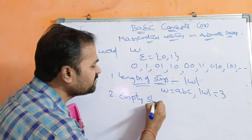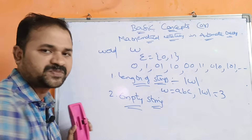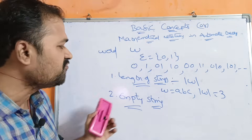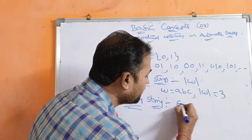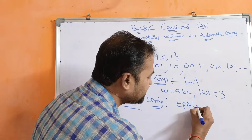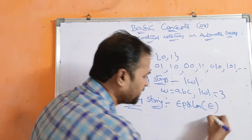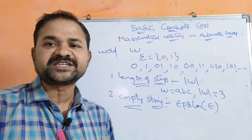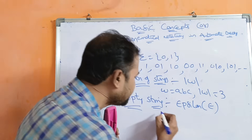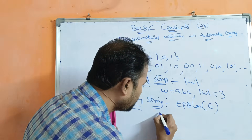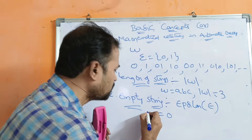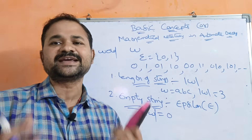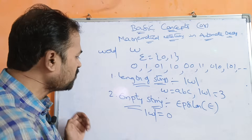The next operation is the empty string. An empty string is a string with no symbols, and it is always denoted by the symbol epsilon. The length of the empty string is zero — that is, |W| = 0 — because the empty string doesn't contain any symbols.